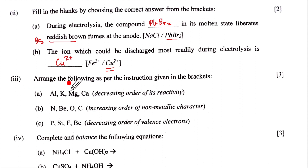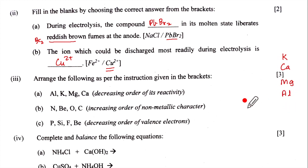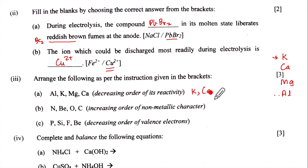Part three: arrange Al, K, Mg, Ca in decreasing order of reactivity. Using the activity series, the order from most to least reactive is: K, then Ca, then Mg, then Al. This is the decreasing order of reactivity since at the top of the series is the most active element.